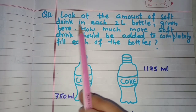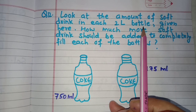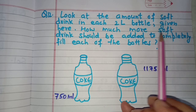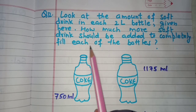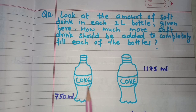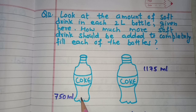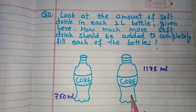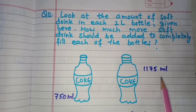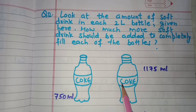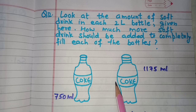Next is question number twelve: look at the amount of soft drink in each 2-litre bottle — how much more soft drink should be added to completely fill each bottle? Two bottles are given, each with a capacity of 2 litres. The first bottle has 750 ml and the second has 1,175 ml, so more soft drink can be added to both to reach 2 litres.